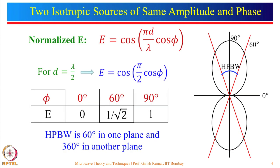For 2 isotropic sources of same amplitude and phase, we can write the normalized value of E — note that 2E₀ does not appear since this is normalized. Whenever we talk about an antenna pattern, we always discuss the normalized radiation pattern. Let us take the case when the distance between the 2 elements is equal to λ/2. Substituting d = λ/2 gives the expression cos(π/2 · cosφ).